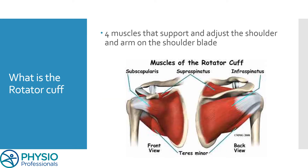So what is the rotator cuff? There are four muscles that support the shoulder. These help the shoulder with moving, lifting, and also stop the shoulder from dislocating, so they pretty much protect that shoulder and scapula. When you think of the shoulder, I want you to think of it as a ball hanging from the roof by four strings — those are your rotator cuff muscles. We're going to talk about what happens if you cut one of those strings.